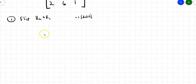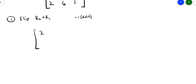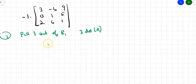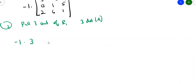Let's flip row 1 and row 2, giving [3, -6, 9; 0, 1, 5; 2, 6, 1], multiplied by -1 on the outside. Next, I'll pull a 3 out of row 1, which means multiplying the determinant by 3. After factoring, row 1 becomes [1, -2, 3], leaving the matrix as [1, -2, 3; 0, 1, 5; 2, 6, 1] with -1 times 3 on the outside.